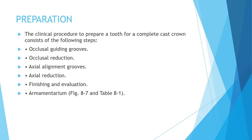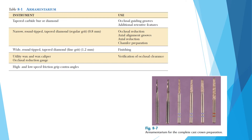The clinical procedure to prepare a tooth for the complete cast crown consists of the following steps: occlusal guiding grooves, occlusal reduction, axial alignment grooves, axial reduction, finishing, and evaluation. The instruments used include a tapered carbide bur or narrow round-tipped diamond for grooves and additional retention, and a wide round-tipped tapered diamond for occlusal reduction.